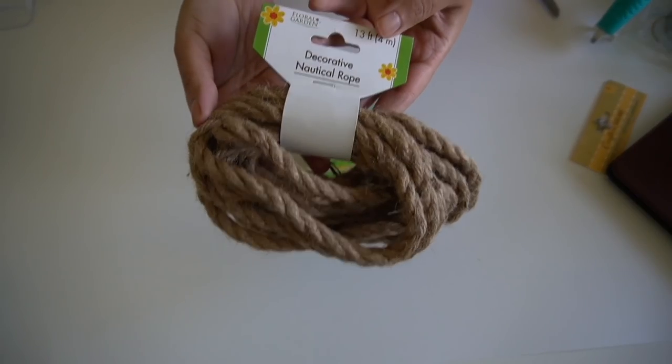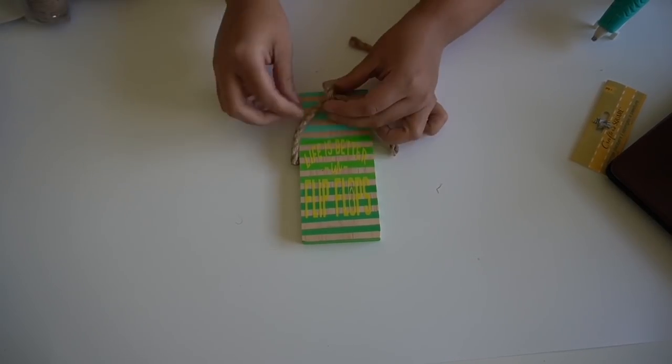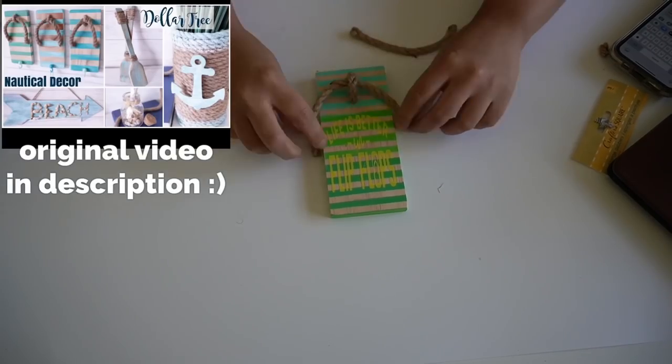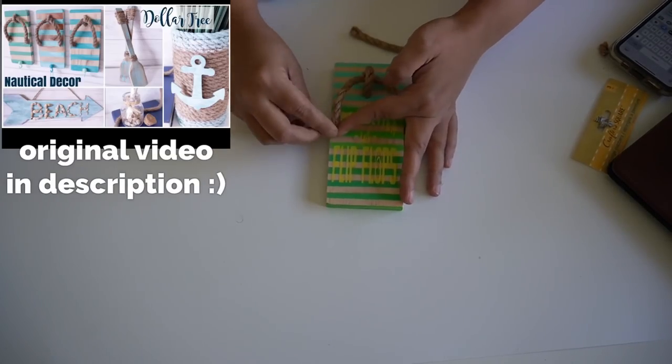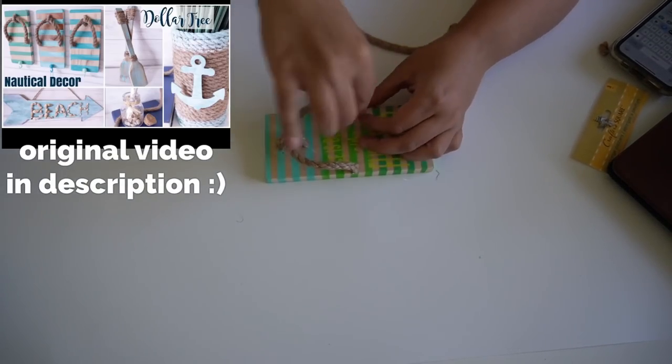And then I'm using Dollar Tree nautical rope, which you can find in the floral section. I'm grabbing two pieces, one for the middle, which is going to be a little loop and one for the sides. And I'm just using regular hot glue for this.